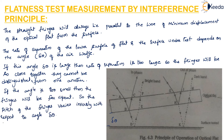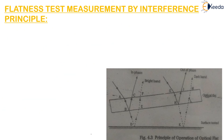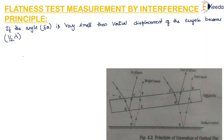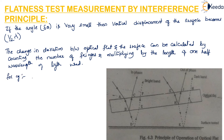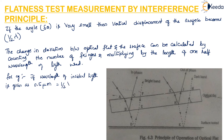The path difference from one fringe to the next similar fringe is one whole wavelength. When the angle dθ is very small, the vertical displacement of the surface becomes half the wavelength. The change in elevation between the optical flat and the surface can be calculated by counting the number of fringes and multiplying by one half-wavelength of the light used. For example, if the wavelength of the incident light is 0.5 micrometers, then half the wavelength equals 0.25 micrometers.